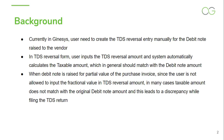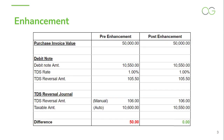Let's try to understand the enhancement made with the help of an example. As you can see on your screen, I have divided the table into two parts — Pre-enhancement and Post-enhancement. Let's talk about the pre-enhancement part first. Suppose a purchase invoice is raised worth Rs. 50,000 and the TDS rate applicable on it is 1%. Now, a debit note is raised against the invoice worth Rs. 10,550 and the TDS rate applicable on it is 1%, same as the purchase invoice. Accordingly, the TDS Reversal amount should be 1% of Rs. 10,550, which comes to Rs. 105.5.